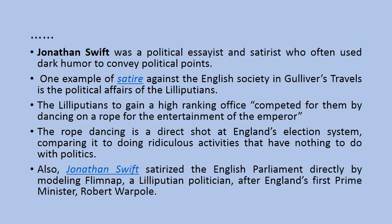Jonathan Swift was a political essayist and satirist who often used dark humor to convey political points. One example of satire against English society in Gulliver's Travels is the political affairs of the Lilliputians. The Lilliputians, to gain a high-ranking office, competed for them by dancing on a rope for the entertainment of the emperor. The rope dancing is a direct shot at England's election system, comparing it to doing ridiculous activities that have nothing to do with politics.